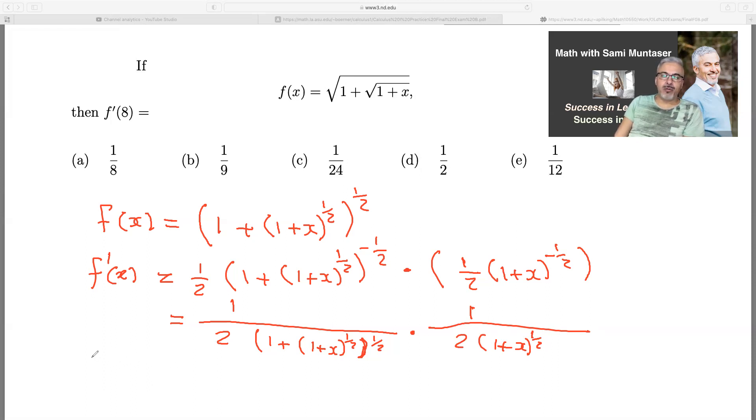Which gives me one over four, two, one plus one plus eight. And the part of half is the same as square root. And that's all to the power of one half, which also means the square root. I'm just gonna write a half there.